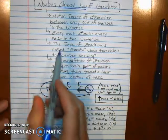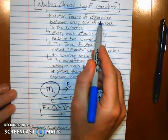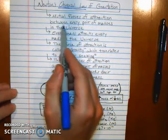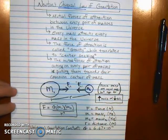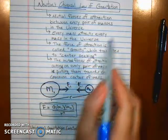there's an equal and opposite force. And so Newton said that these mutual forces of attraction, they act between every pair of masses in the universe. And if you just stop and think about that, that means every mass attracts every mass.